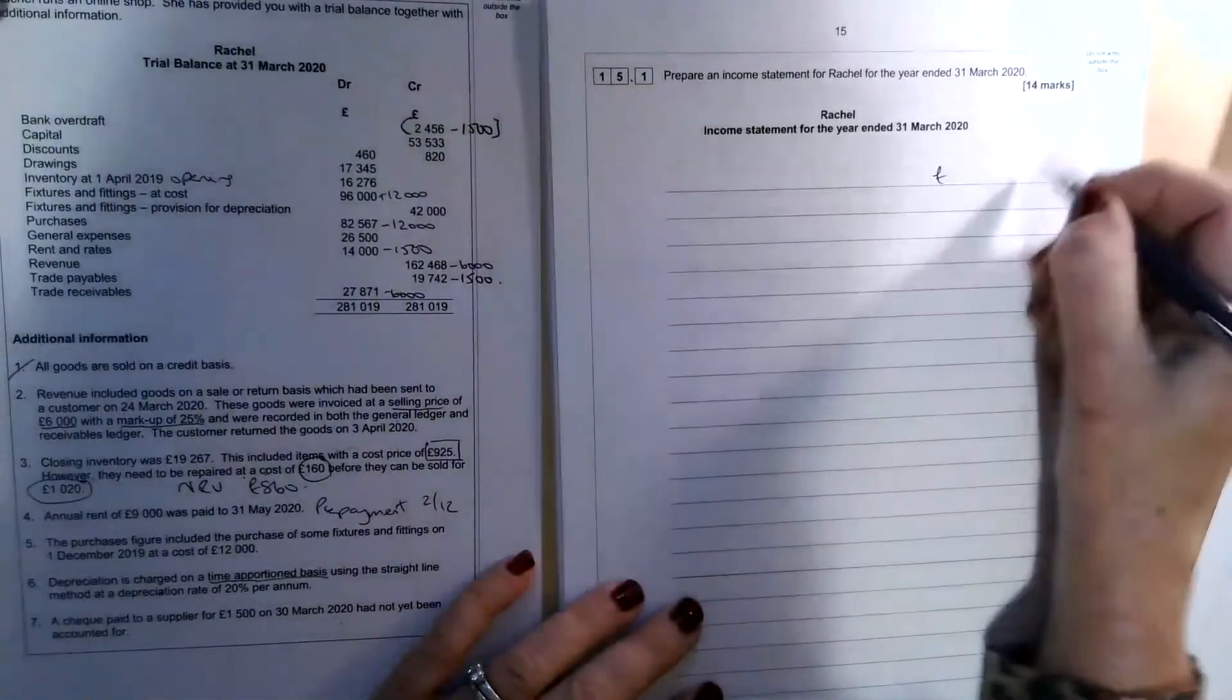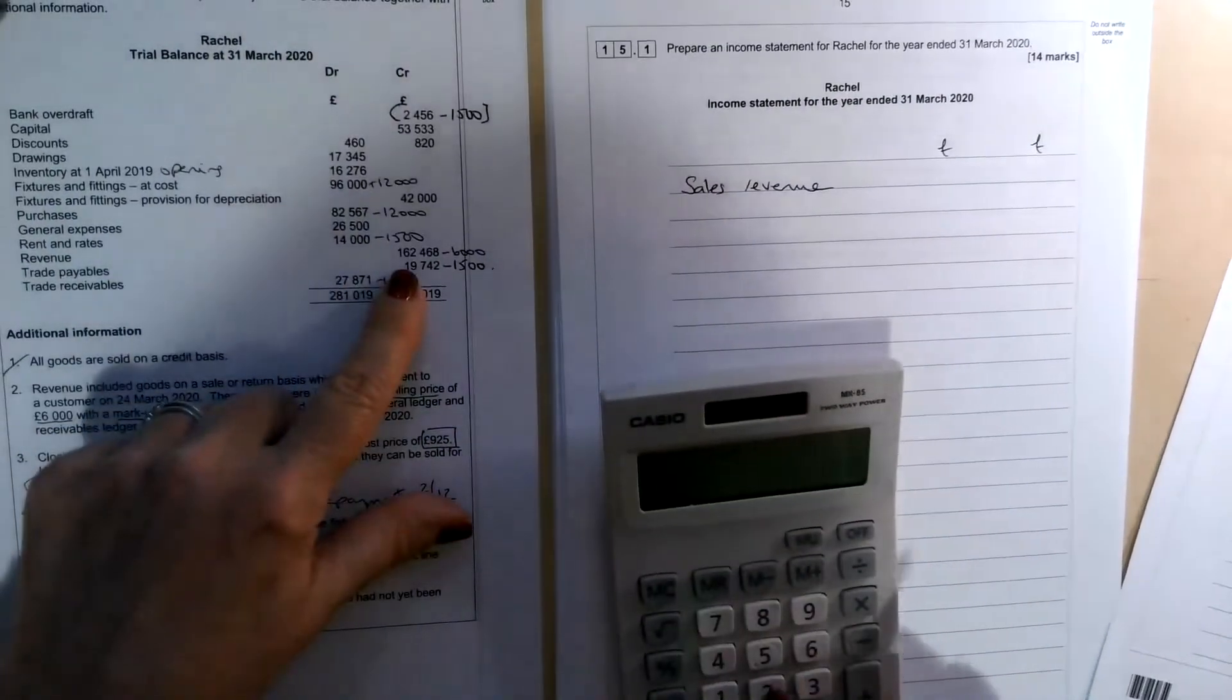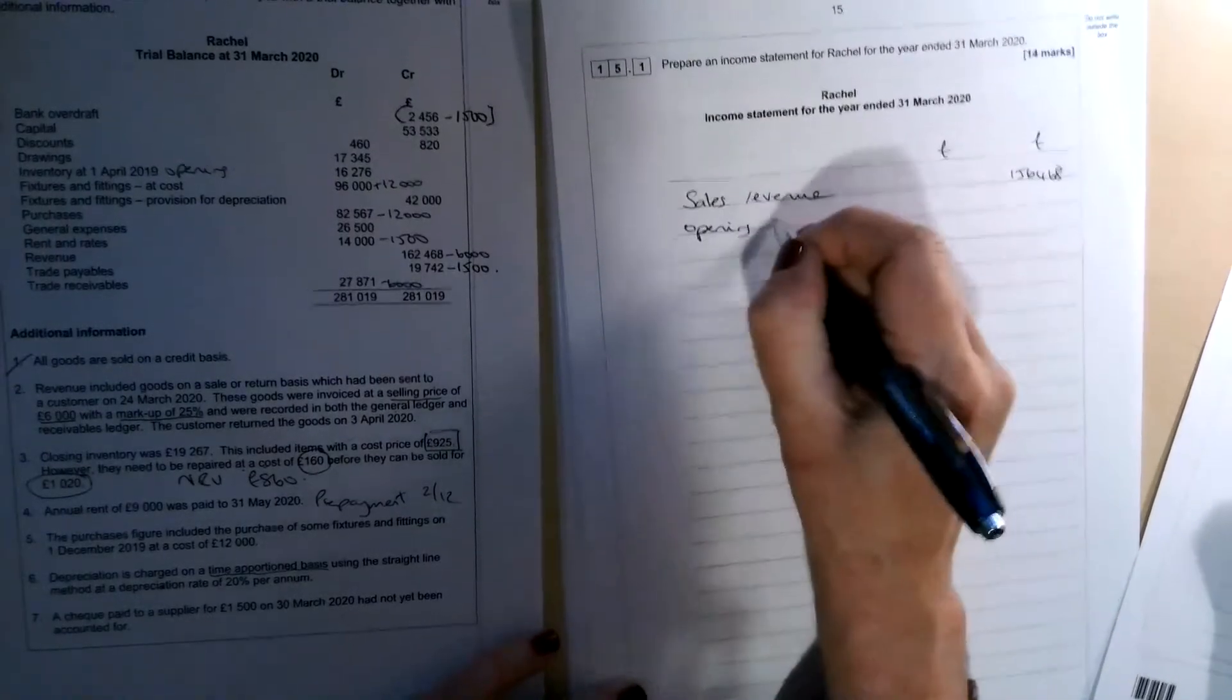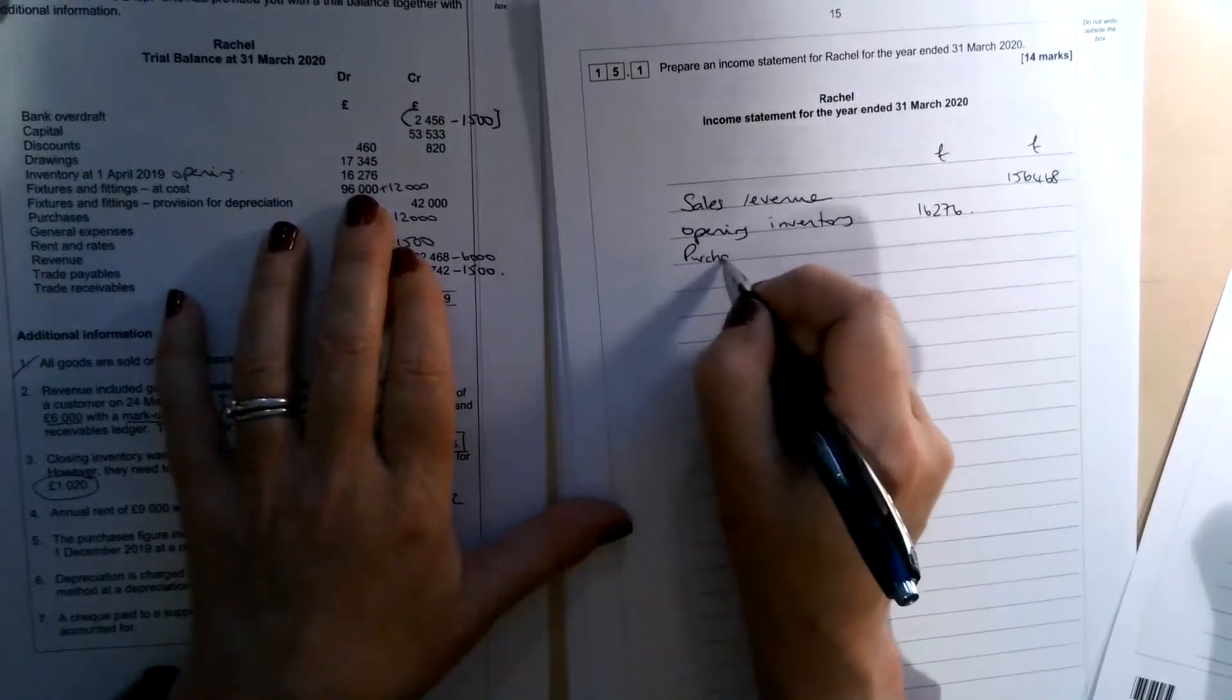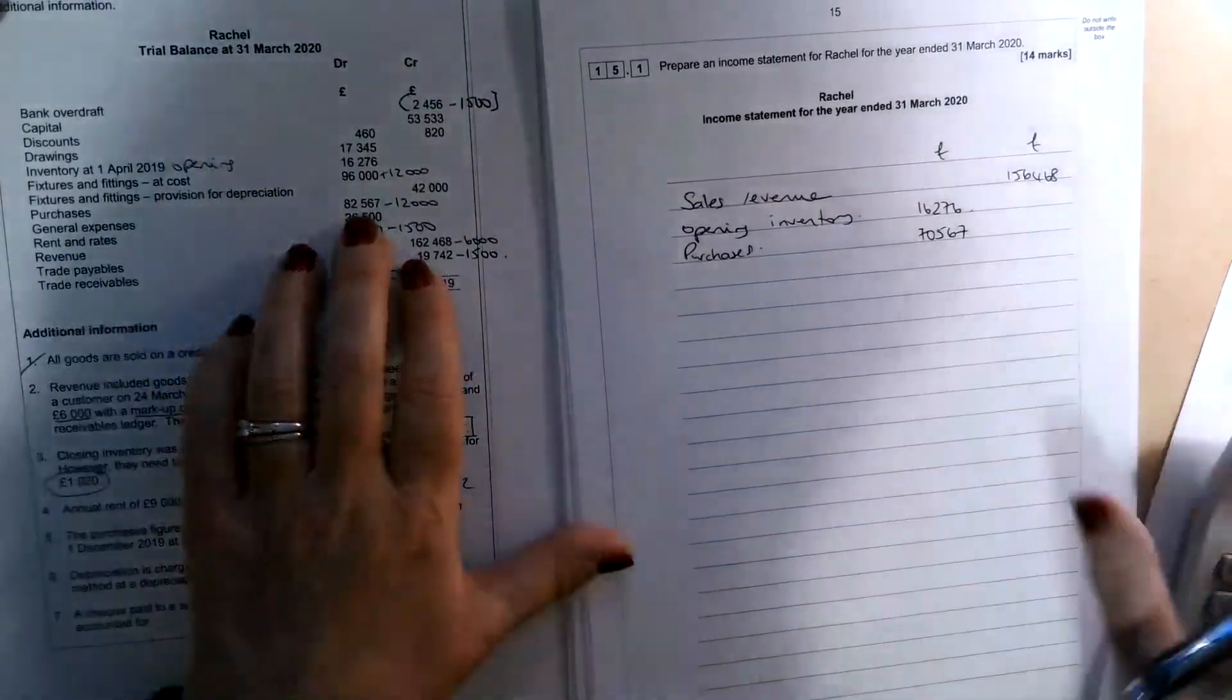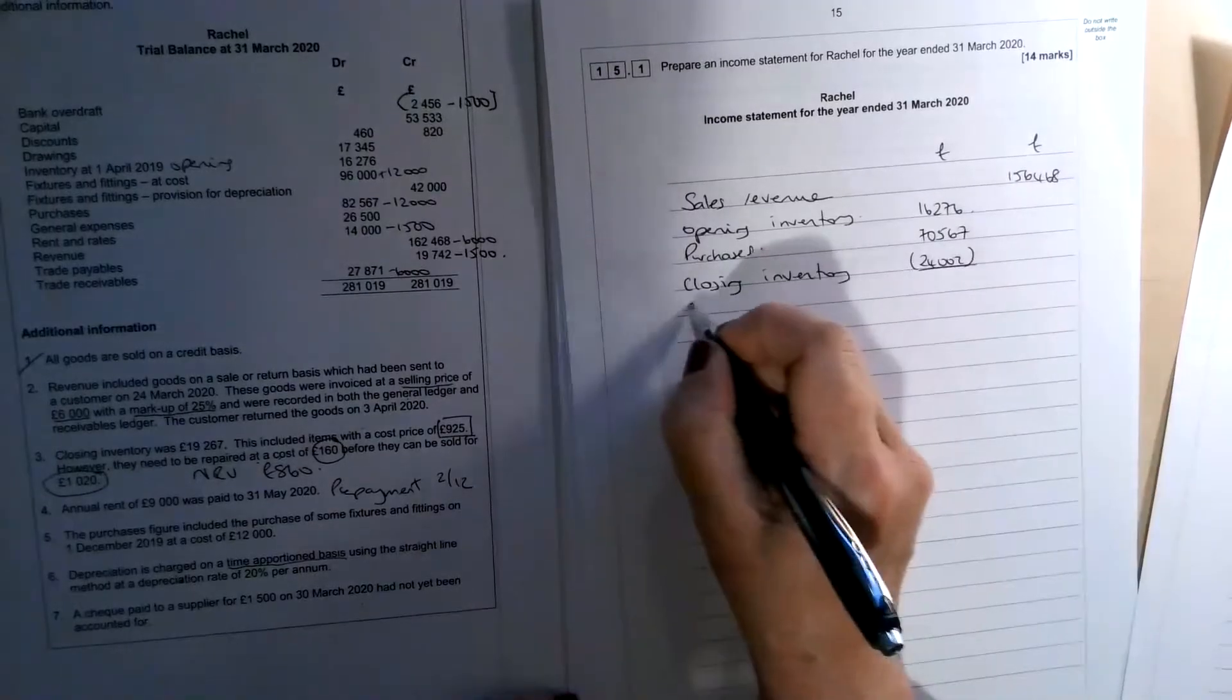So if we start with the income statement, now they've already given it the title for us. We don't need to rewrite that, but we can start with our sales revenue. I'll be in my calculator for this. So the sales revenue, £162,468 minus the £6,000 goods on sale or return. So £156,468 is going in there. And we can start with our cost of sales opening inventory. We can just take that straight from the trial balance, £16,276. Then we've got purchases. Now the purchases were adjusted, we had the £82567 and we're taking £12,000 off there. So we end up with £70,567 for purchases. And then our closing inventory, we had that there, £24,002 was the adjusted figure for that one. So closing inventory, £24,002. So let's label that. Cost of sales.